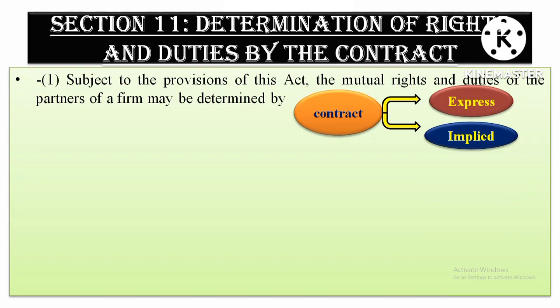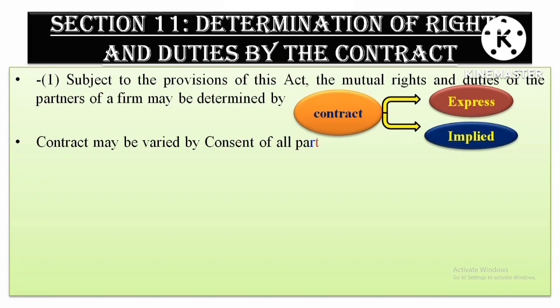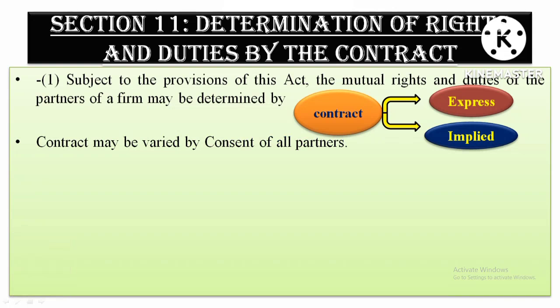So, the partnership itself can also be expressed or implied. Section 11 also says that if there is a change to the contract setting out the mutual rights and duties of partners, that variation will require the consent of all partners. And that consent can also be of two types — either the partners express their consent, or their consent will be implied.